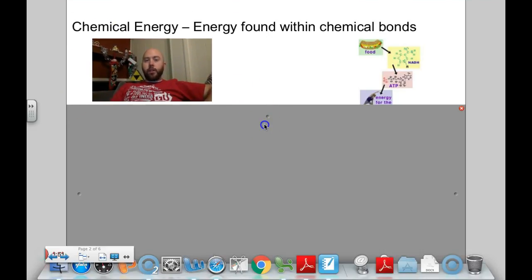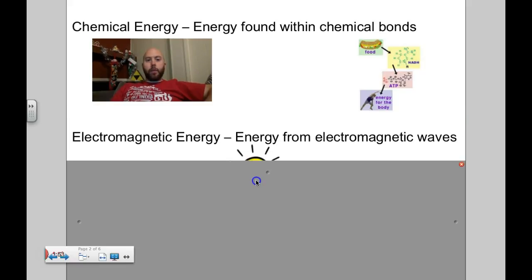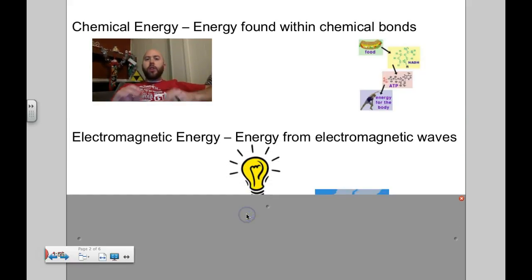A fifth kind would be electromagnetic energy. These are all the energies from the electromagnetic spectrum, which technically does include thermal energy because that's infrared. But more specifically, this is looking at like visible light, so light would be electromagnetic energy.